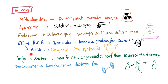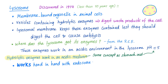In brief, here are the organelles in your cell and their function. Mitochondria is the powerhouse. Lysosome is the soldier, the Lord of Destruction. Endosome is the delivery guy. Endoplasmic reticulum — the Rough is the translator, the Smooth is the donut. Golgi is the sorter. Peroxisome is the gym trainer.